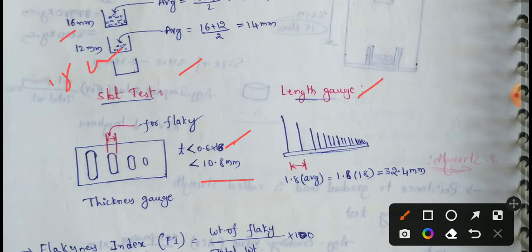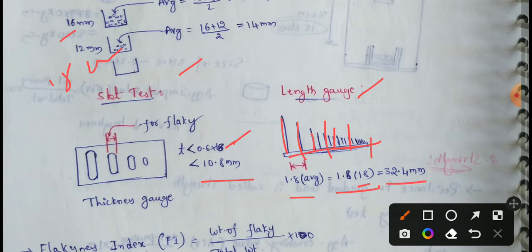For the elongation index, we use elongation bars. With an average mean dimension of 18 mm, the length threshold is 1.8 × 18 = 32.4 mm. Particles longer than 32.4 mm are considered elongated.